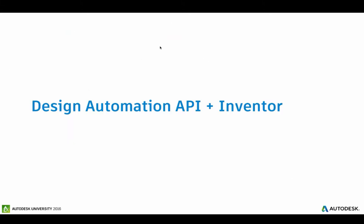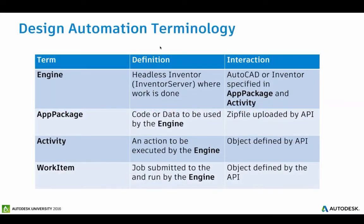What we've basically done is taken the design automation API and added an Inventor engine to the story. Looking at some design automation terminology: when I talk about engines, in our case this is Inventor server — or headless Inventor, Inventor without any UI — and this is where the actual processing is done. An app package is just a chunk of code or data that the engine runs on. In the Inventor case, this is going to be a plugin or static data that it loads. It's uploaded via zip file.